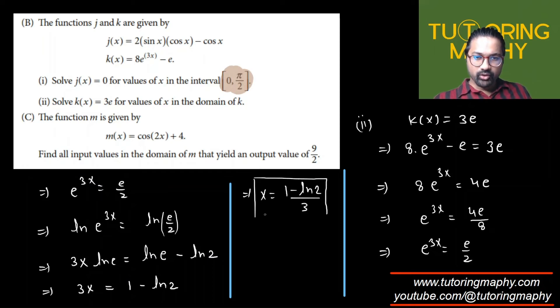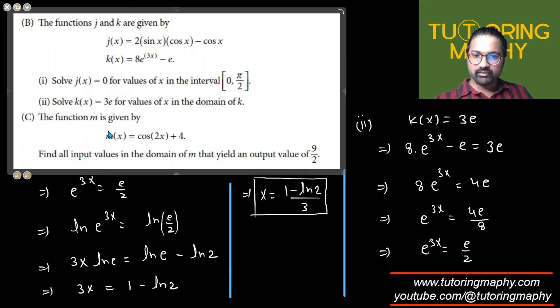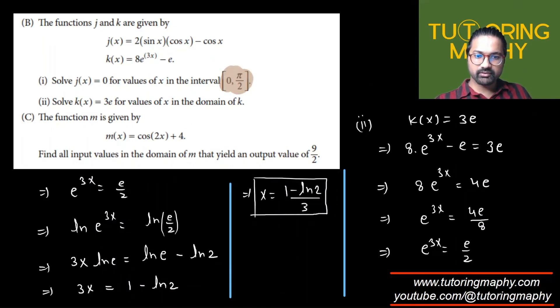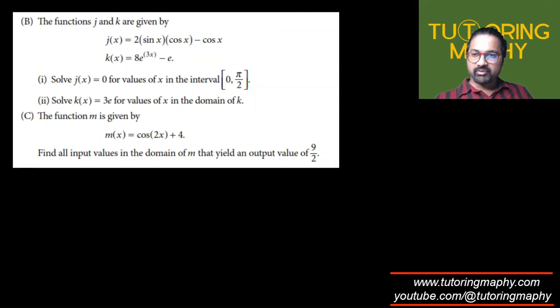I hope this one makes sense. So this was about part B. Let's talk about part C now. So let me just create a replica of this over on the next page. Part C talks about that the function m is given by this. So find all the input values in the domain of m that yield an output value of 9/2.